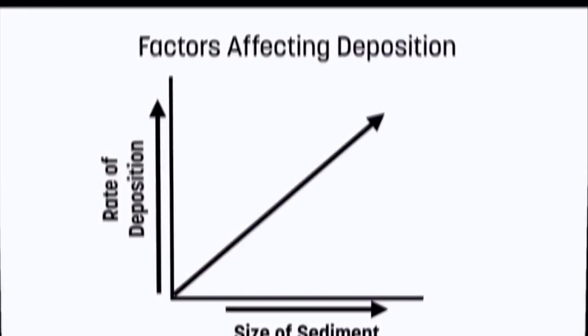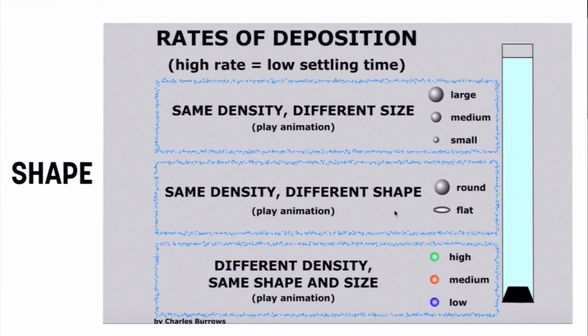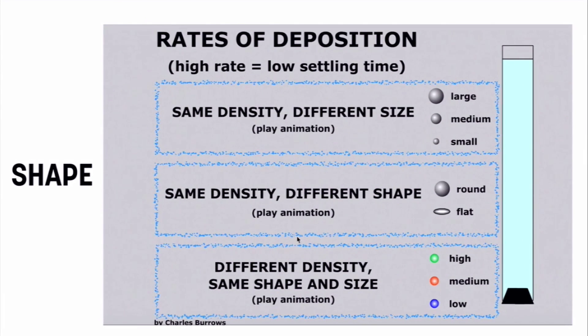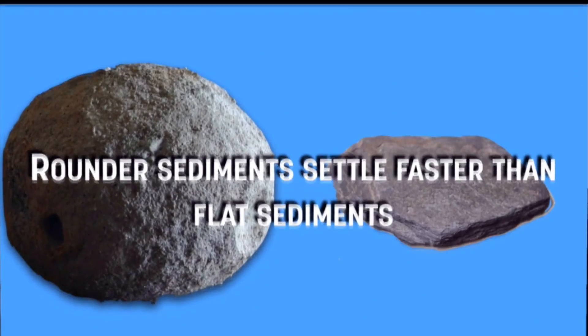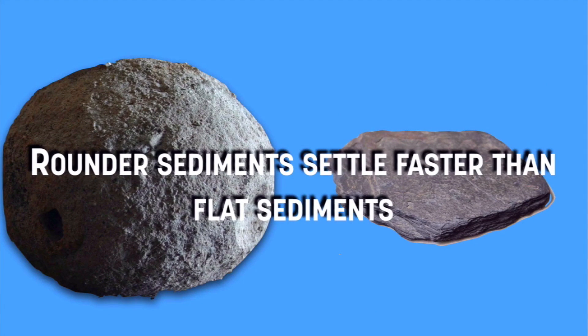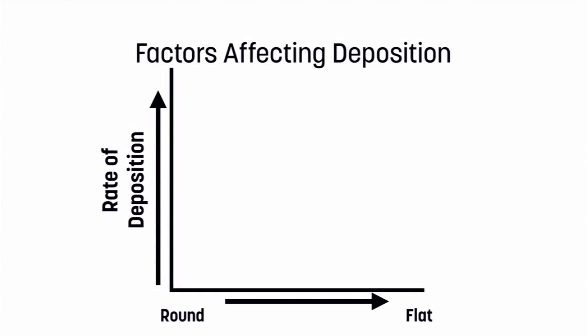Let's move on to the next characteristic: shape. Looking at shape, I have two different shapes — a round object and a flat one. The flat object takes a longer amount of time to settle in the water because of its shape; it's twirling around and hitting the sides. So rounder sediments are going to settle faster than flat sediments. On a graph, going from round to flat sediments, the rate of deposition decreases — an indirect relationship. No matter what, the flatter the sediment, the longer it takes to settle; the rounder, the easier it is to settle.